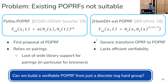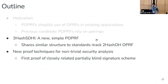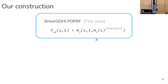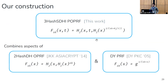That left us thinking whether we could build a verifiable POPRF from just a discrete log hard group. The answer is yes. The construction we propose is called 3-hash-SDHI, named for the three hashes in the construction and for the strong Diffie-Hellman inversion structure. It combines aspects of two existing PRFs: the Dodis-Yampolskiy PRF strategy is used for encoding the public tag and provides algebraic structure for proofs of verifiability — in contrast to the generic transform which encoded the public tag using a non-algebraic hash function. On the other hand, we use the 2-hash-DH OPRF strategy to encode the secret input and perform a blinded evaluation, which is how 3-hash-SDHI maintains similar efficiency characteristics to 2-hash-DH.